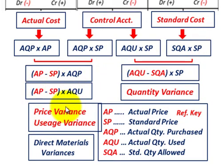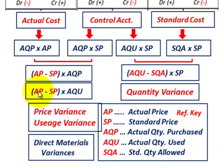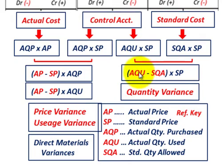For our price variance, that would simply be the difference between the actual price and the standard price, times the actual quantity purchased. You can also look at it as a usage variance — just taking the difference between the actual price and the standard price times the actual quantity used. And for our quantity variance, that would be the difference between actual quantity used and standard quantity allowed, times the standard price.